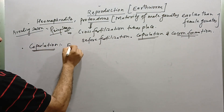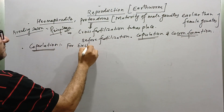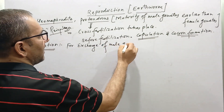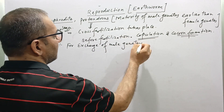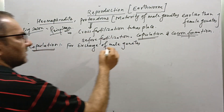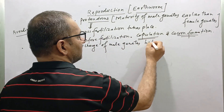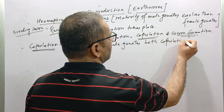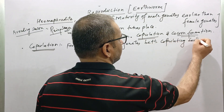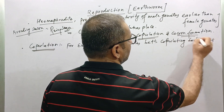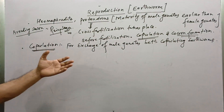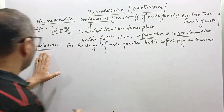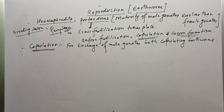Copulation is a process for exchange of male gametes between copulating earthworms. The process of exchange of sperm between copulating earthworms is called copulation.